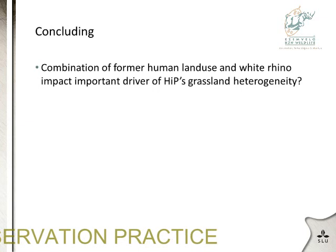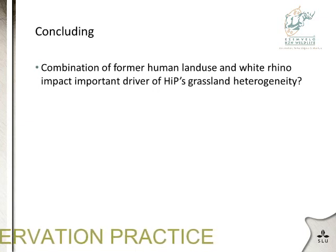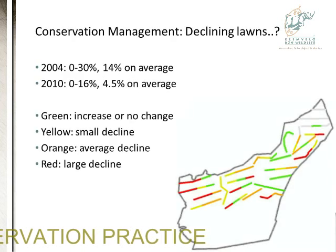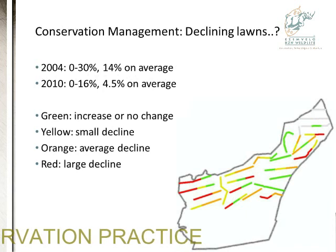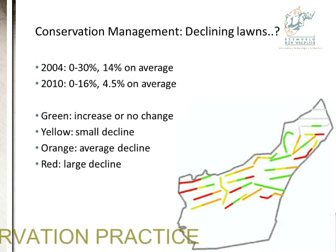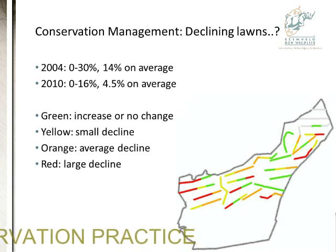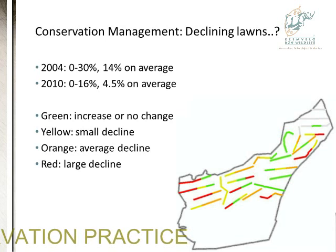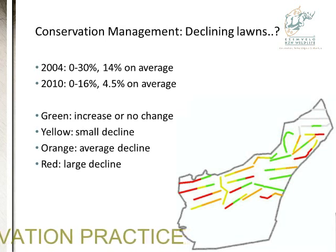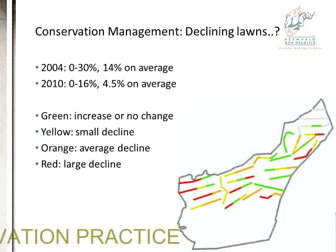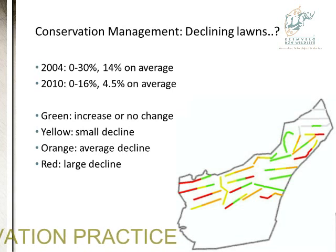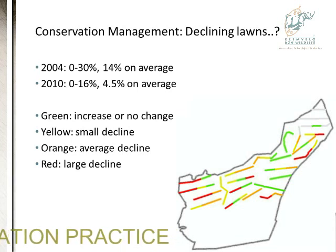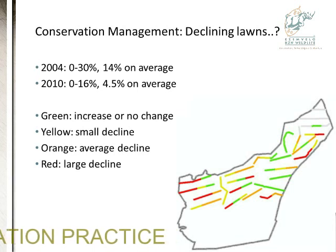A mid-point conclusion: a combination of former human land use and white rhino might be important drivers of HiP's grassland heterogeneity. When I started working in the park around 2001 and mapped grazing lawn cover on all transects, we found that on average 14% of the park was covered by grazing lawns, varying between 0 and 30%. When we reworked these transects in 2010, there was quite a dramatic decline — from 14% on average down to 4.5% on average.